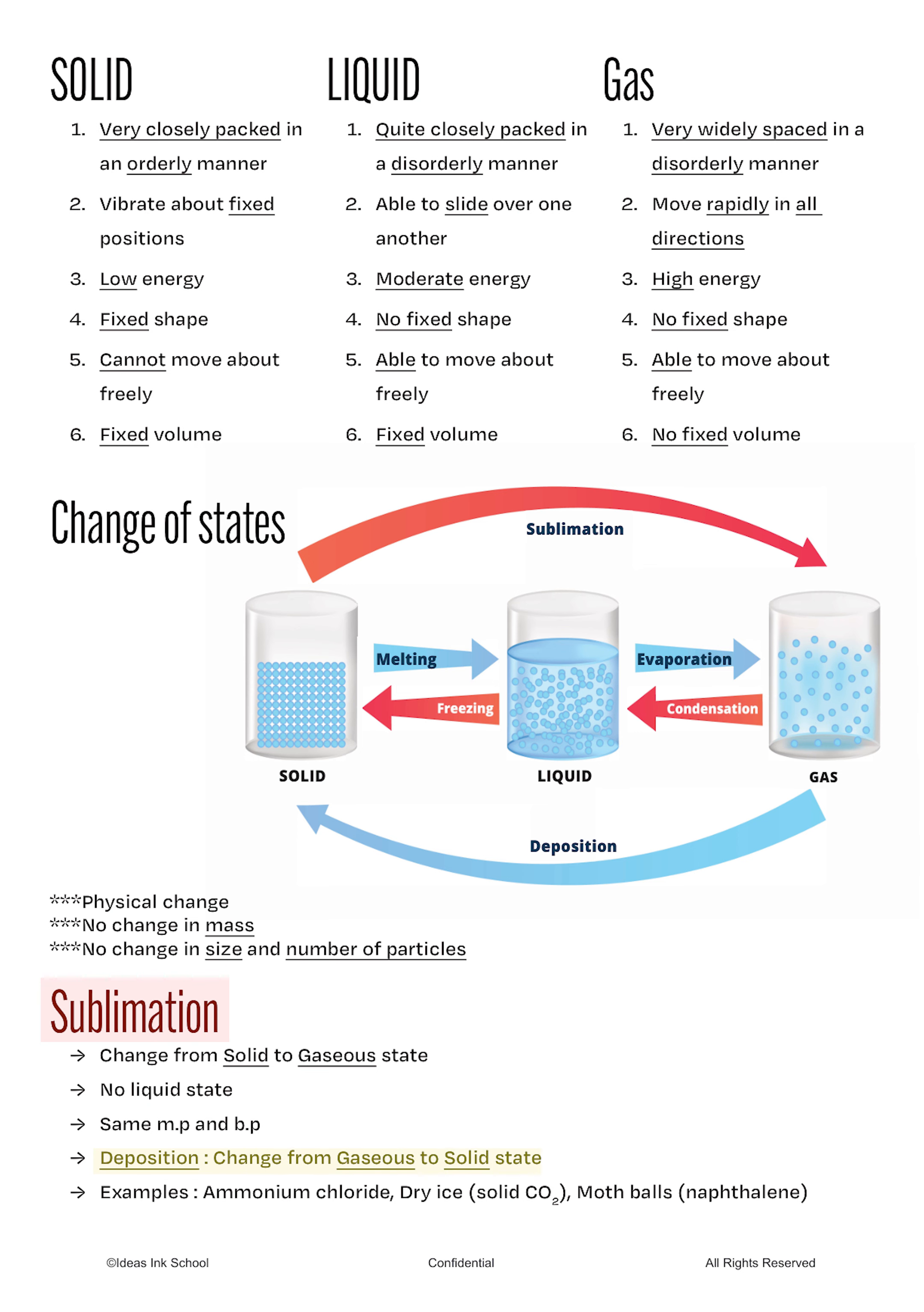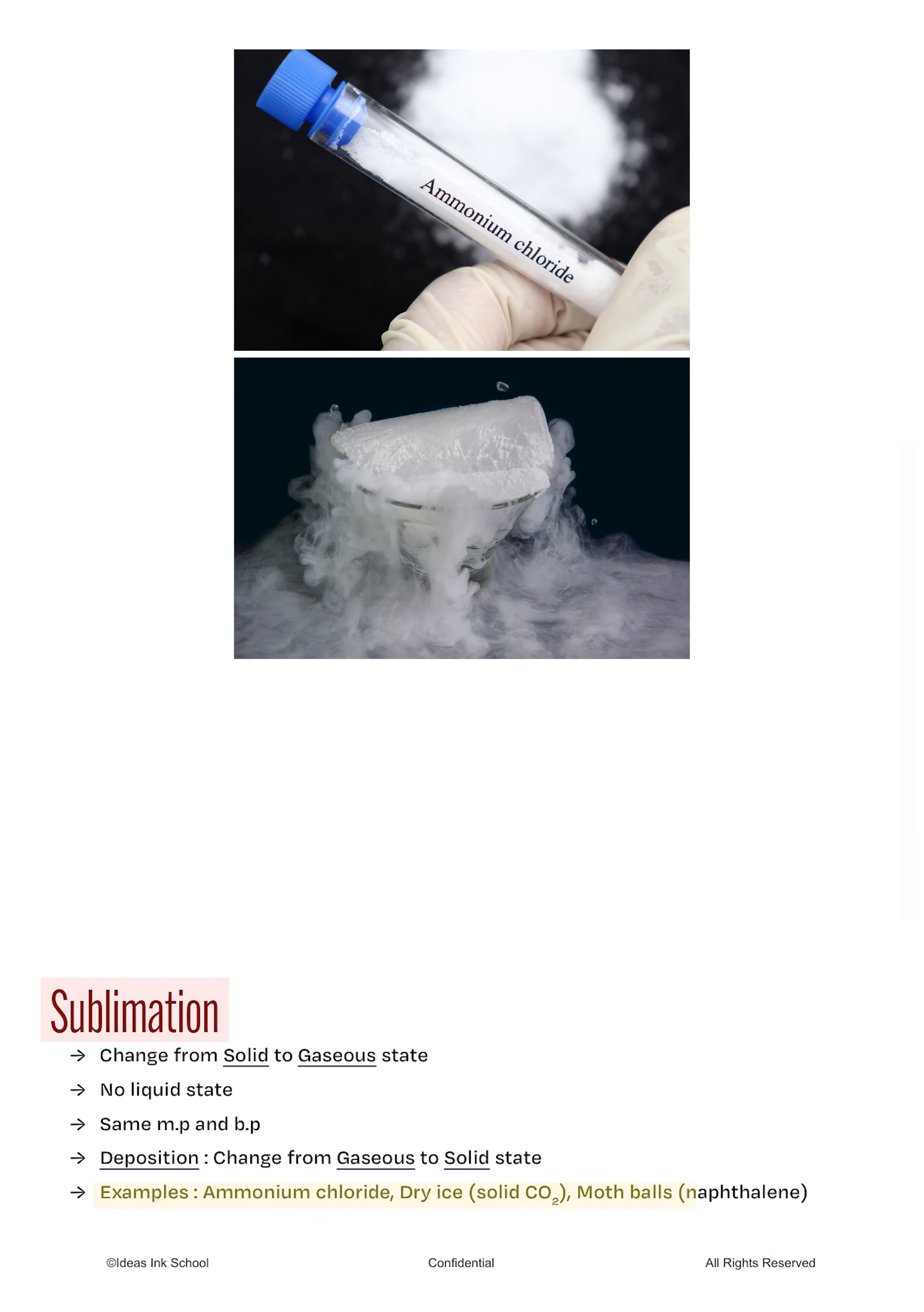This change occurs when a substance in gaseous state becomes a solid. Examples of substances that can sublime include ammonium chloride, dry ice, also known as solid carbon dioxide, and moth balls, which are also known as naphthalene.